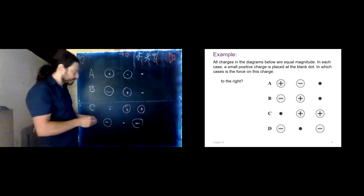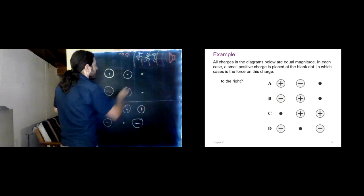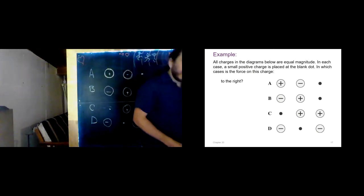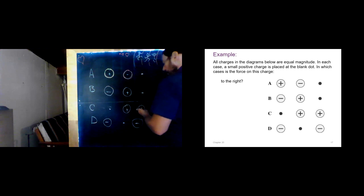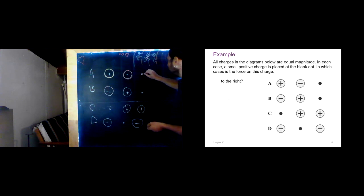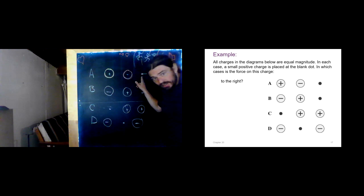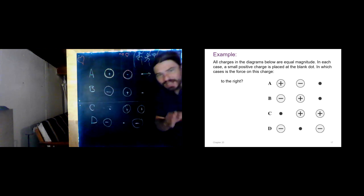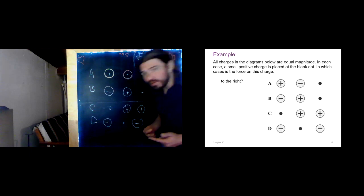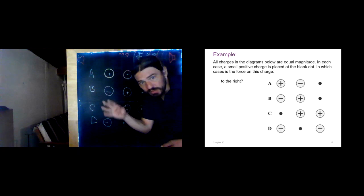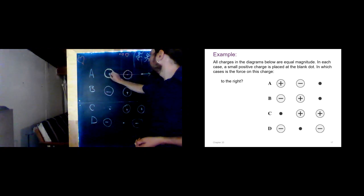Looking at one situation: the positive charge at the dot has a repulsive force to the right from the nearby positive charge. It also has an attractive force to the left from the nearby negative charge. The negative charge is closer — about half as far away — so its force is about four times as large. The attractive force to the left is therefore larger than the repulsive force to the right.